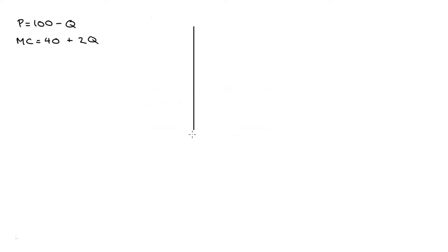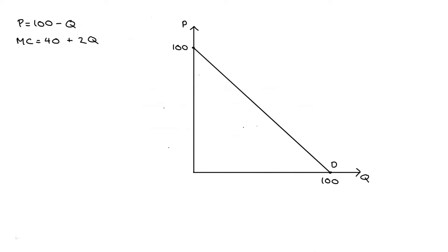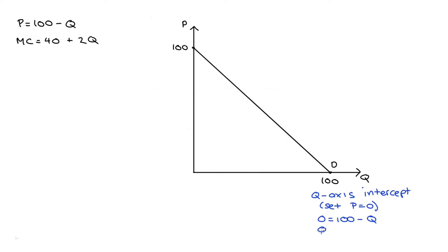I'm going to start off by drawing two axes — price on the vertical axis and quantity on the horizontal. Our demand curve comes through like this. To find the quantity axis intercept, I set price equal to 0: 0 equals 100 minus Q, so Q equals 100.